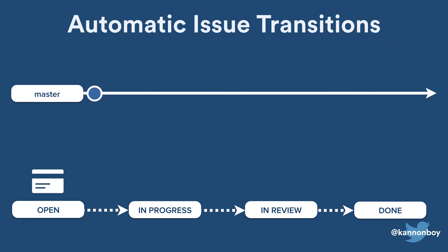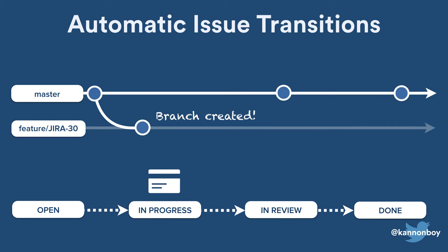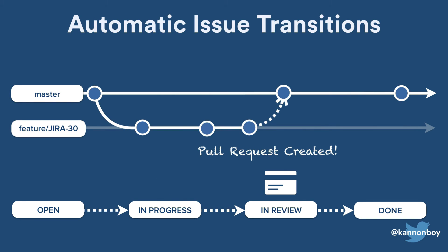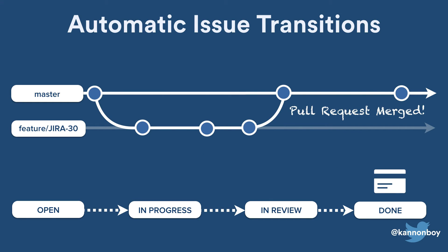Automatic issue transitions solve this problem by letting Bitbucket update your Jira issues for you. When a developer creates a new branch inside their Bitbucket repository, Bitbucket posts that information to Jira, and that triggers an issue transition from the open state into the in-progress state automatically. Then when the developer creates a pull request to merge that branch back into master, Jira automatically transitions that same issue into the in-review state. And then finally, when that pull request is merged, Jira automatically transitions the issue into the done state, and the issue is resolved.